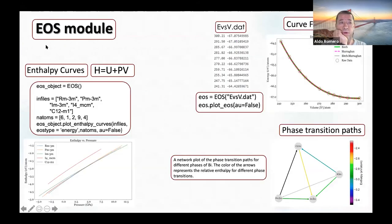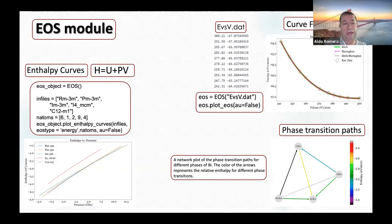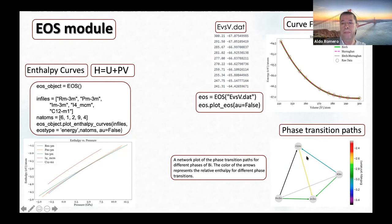We have an interface for equation of state analysis with six different equations of state implemented. You create files with energy versus volume results for different phases, read all of them, and plot energy as a function of pressure. We estimate the best-fitting equation of state, and based on that, we compute the phase transition path. This phase transition path is displayed as a network so users can easily understand how different phases relate to each other.